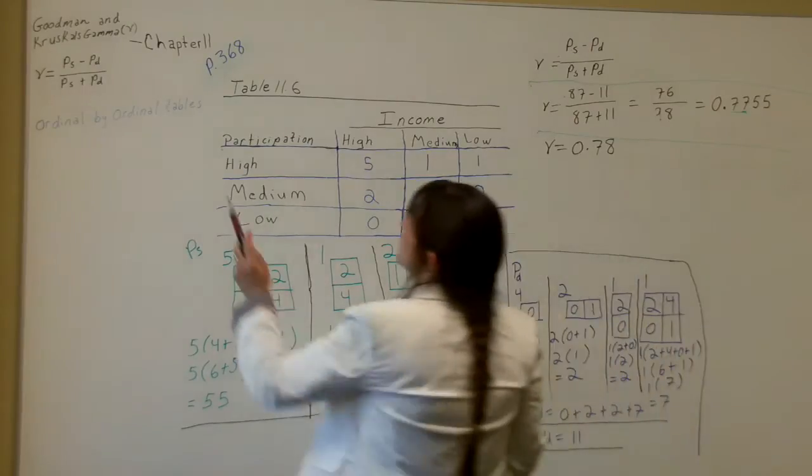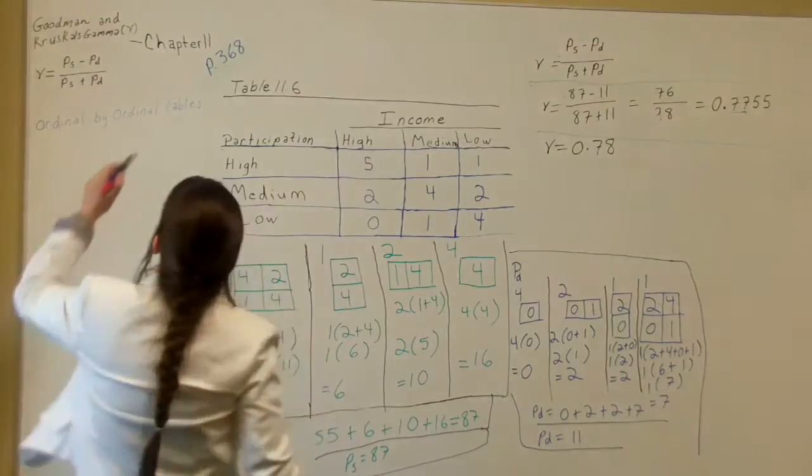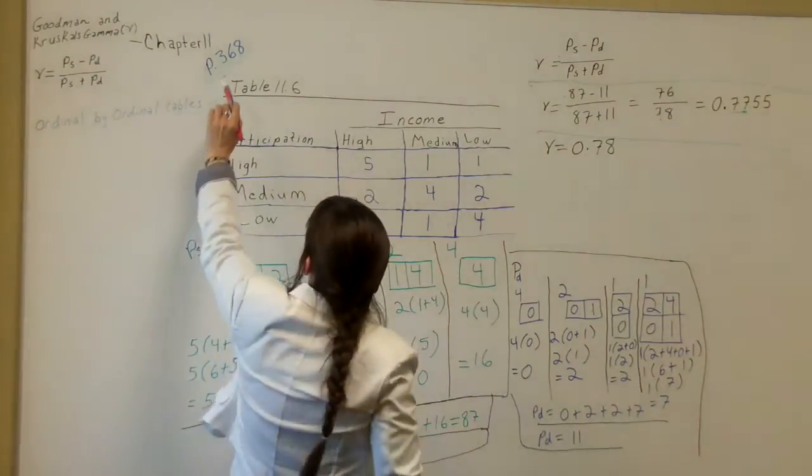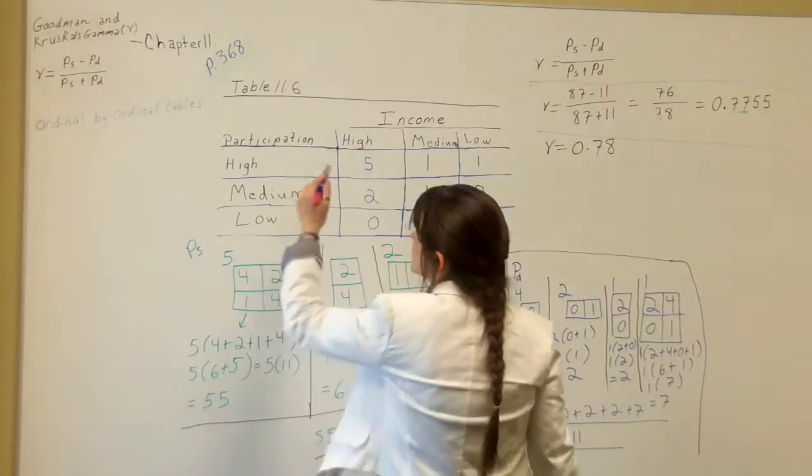This video is about Goodman and Kruskal's Gamma. This is chapter 11. The data is from page 368 of the Sirkin textbook, so go to page 368, table 11.6.